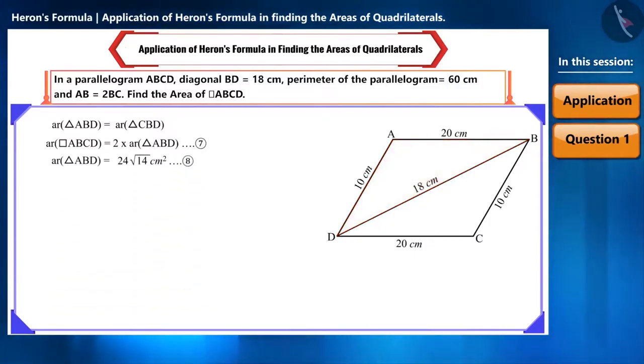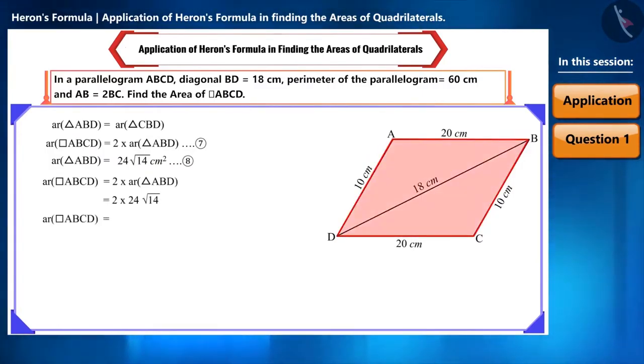And now we can substitute its value in this equation 7 to find the area of the parallelogram. We get the area of the parallelogram ABCD as 48 root 14 cm squared.